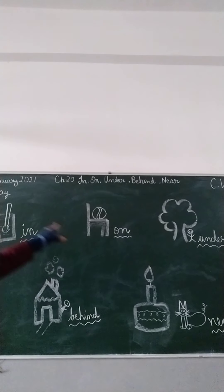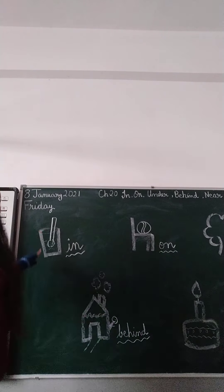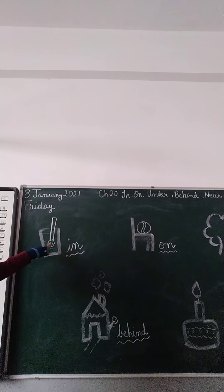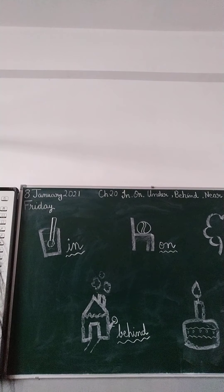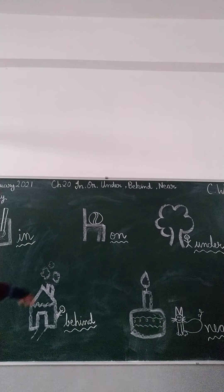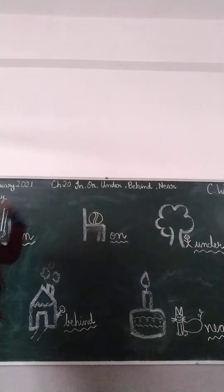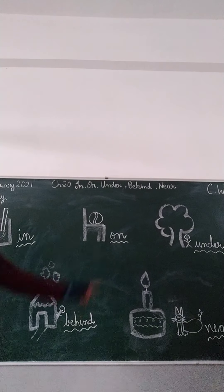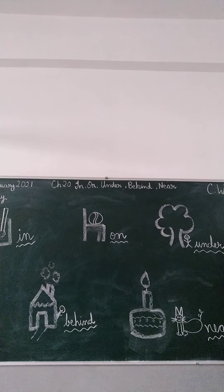Let me explain the same topic with the help of what I have drawn on the board. The first one is 'in': the spoon is in the glass — my spoon is kept inside the glass. In the second picture, the ball is on the chair — it is kept over the chair, so it is 'on' the chair. In the third picture, the man is standing under the tree — so the man is under the tree.